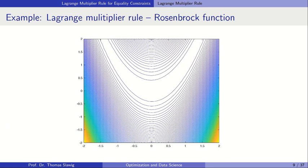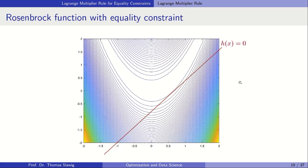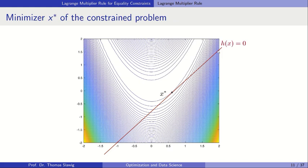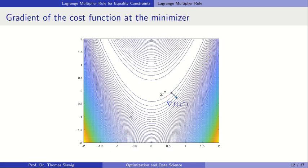As an example, consider the Rosenbrock function. The level lines show a banana-shaped valley with the global minimizer at (1,1). Adding a simple equality constraint — a straight line — we can easily identify that the minimizer on the admissible set is the point where the line touches the lowest level curve. The gradient of f at this point always points in the direction of highest ascent and is orthogonal to the level lines.